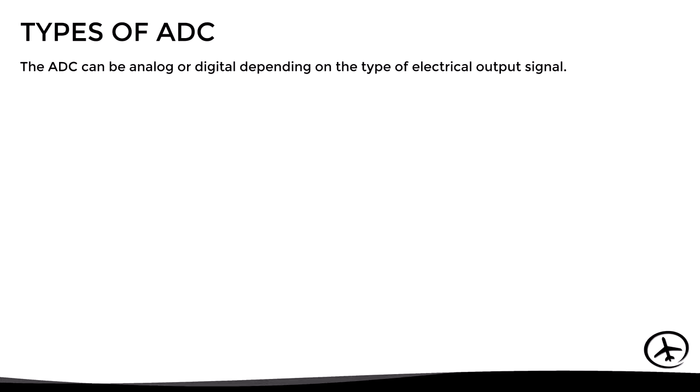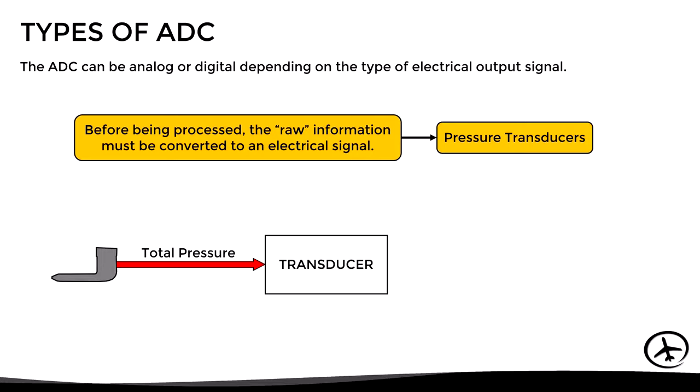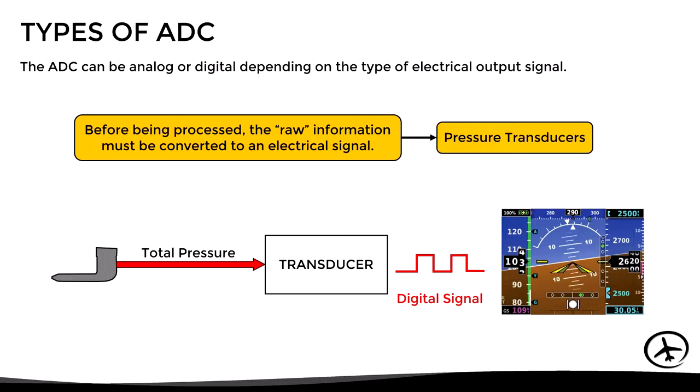The ADC also feeds the flight data recorder and ACARS. There are two types of ADCs: an ADC can be analog or digital depending on the type of electrical output signal generated. Before being processed, the raw information must be converted to an electrical signal — for example, total pressure from the pitot tube is converted via a pressure transducer. The transducer's output can be either an analog signal, used to feed conventional instruments, or a digital signal, used to feed electronic instruments.